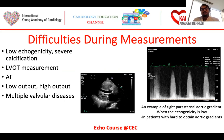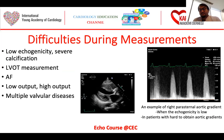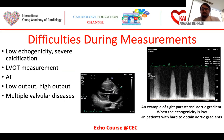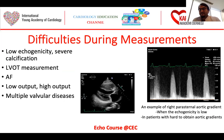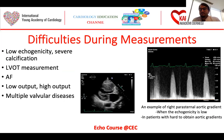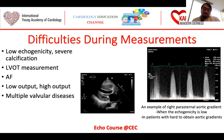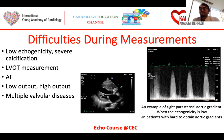There are difficulties during measurements: low echogenicity, severe calcifications, LVOT measurement errors, atrial fibrillation, low output, high output states, and multiple valvular diseases all affect echocardiographic measurements. On the right side, a continuous wave Doppler measurement of an aortic valve gradient is shown from transthoracic echocardiography. When echogenicity is poor and aortic gradients are difficult to obtain, we should always consider right parasternal aortic measurements during transthoracic echocardiography, which can give better gradient measurements compared to the left-sided parasternal long or short axis.